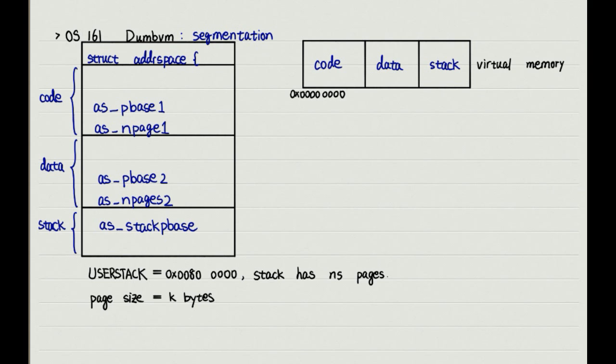Because the size of the stack and the top of the stack are predetermined when we design OS 161, and it is assumed that each stack has n pages. So, we don't need to add n-pages 3.